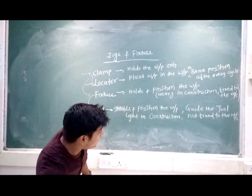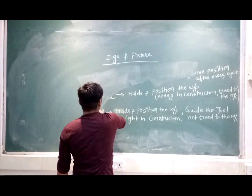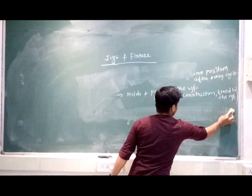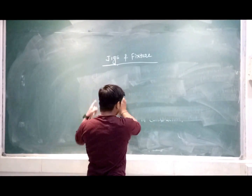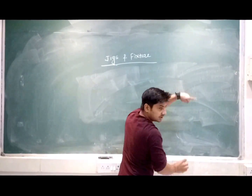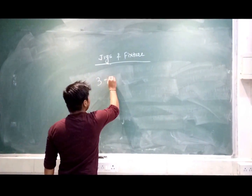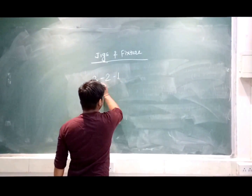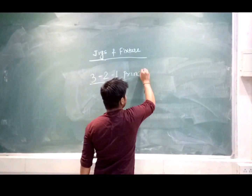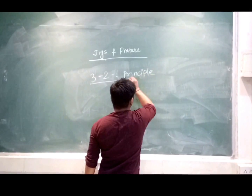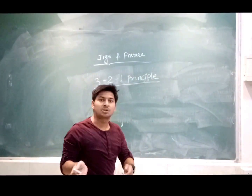The next important part is the 3-2-1 principle. In jigs and fixtures, the 3-2-1 principle is very important from the GATE and engineering services point of view. This is the 3-2-1 principle of pin locators.